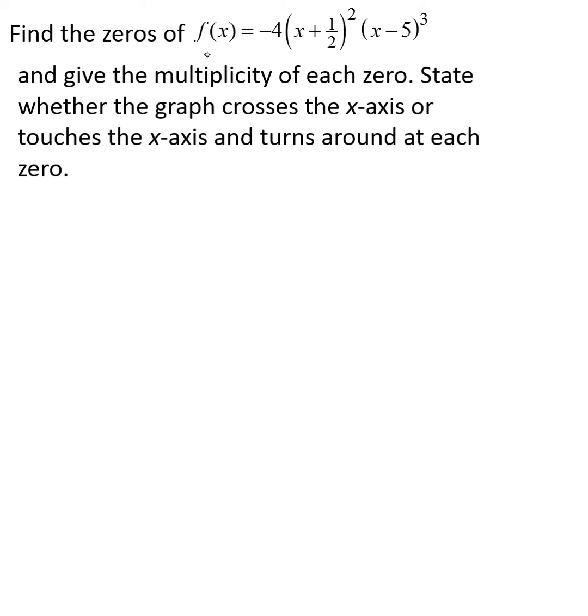To find the zeros here, we're going to replace the f of x with zero and solve the resulting equation. So this is already factored for us, and so we're essentially going to just take each of the factors and set them equal to zero.